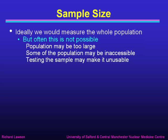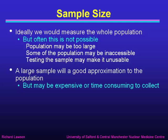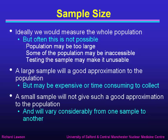Sample size is important because ideally we would measure the whole population, but often that's not possible. The population may be too large, some of it may be inaccessible, or testing the sample may make it unusable — like testing our syringes: once we've filled them with liquid to test them, they're no longer usable, so we have to restrict ourselves to a sample. A large sample will be a good approximation to the population, but may be expensive or time-consuming to collect. A small sample won't give such a good approximation and will vary considerably from one sample to another, so we have to allow for this variability.